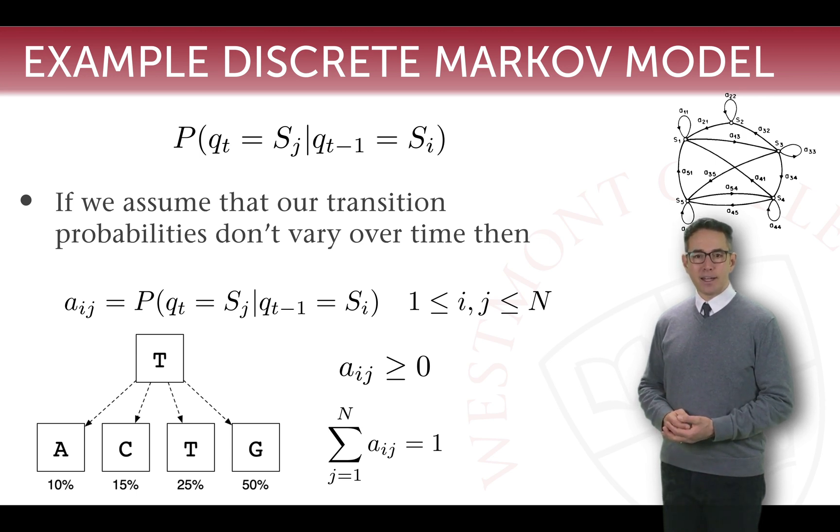And the probability of moving from t to c is 15 percent. And t to t is 25 percent. And t to g is 50 percent. So using that equation at the top we can say the probability that at time qt we're in state g given that at qt minus one we were in state t is 50 percent. If you look at those probabilities you can see that yes in fact they're all greater than or equal to zero and the sum of all probabilities leaving state t adds up to one because you must make some transition.